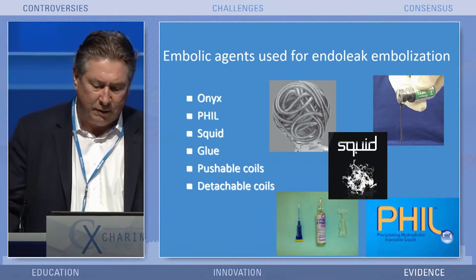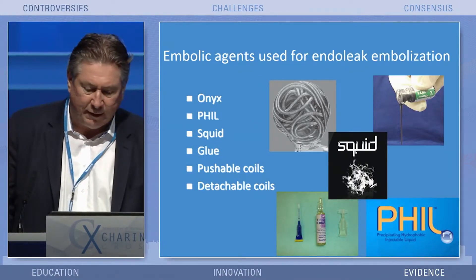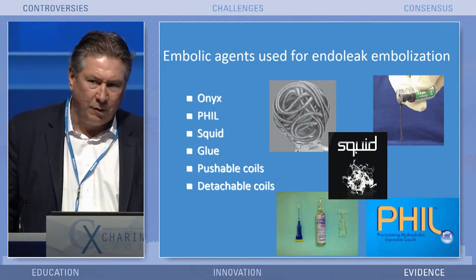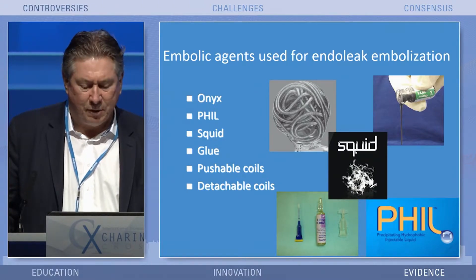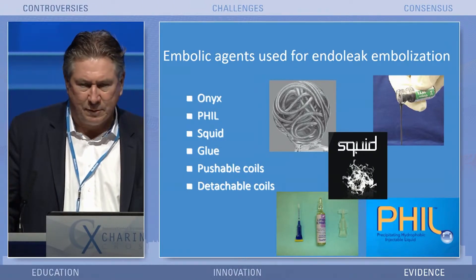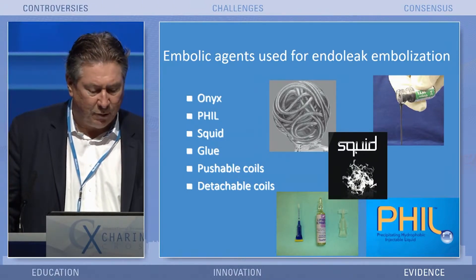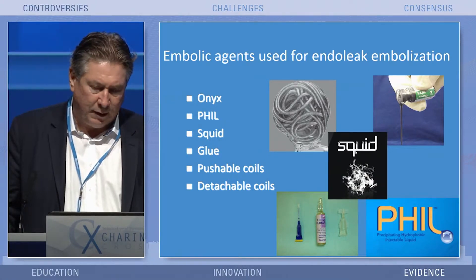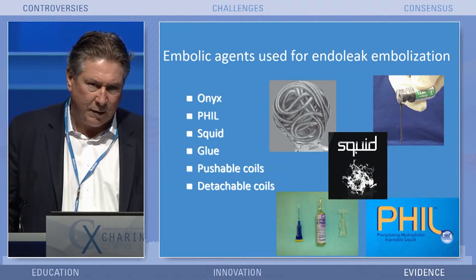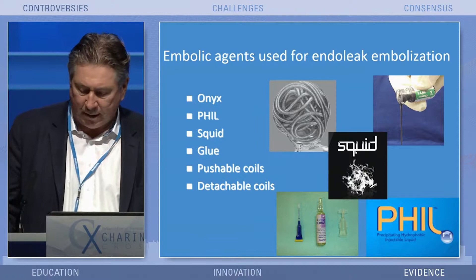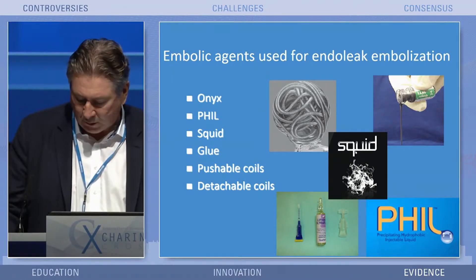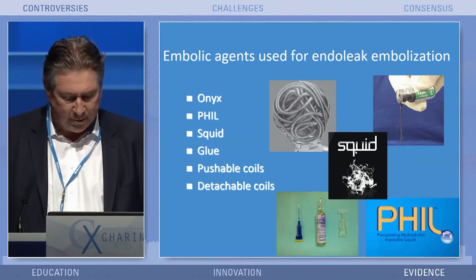You'll know that these are the main embolic agents for endoleak embolization. They're the liquid embolics, so Onyx is the most well known, but there are some new kids on the block. Some people use glue, I don't. And then other people use pushable or detachable coils. I think the detachable coils are quite good for some endoleaks.